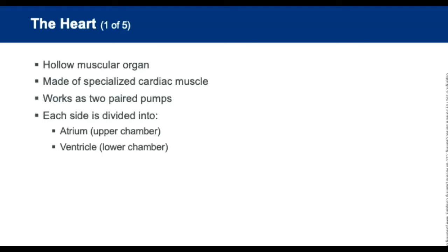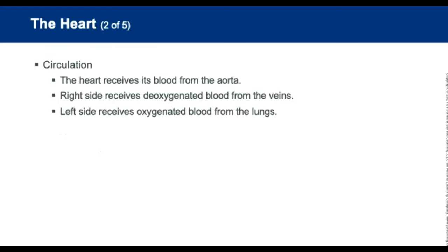The heart is an involuntary muscle made of cardiac muscle called myocardium. It works with two paired pumps. The left side is a high-pressure pump with thick muscle; the right side is a thinner, low-pressure pump. The top chambers are the atria and the bottom chambers are the ventricles. The heart receives blood from the aorta via the coronary arteries. The right side receives deoxygenated blood from the body's veins. Oxygenated blood returns from the lungs through the pulmonary veins into the left side of the heart and is pumped into the aorta and then to the arteries of the body. Valves guide the path of blood through the heart.